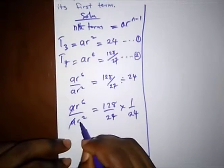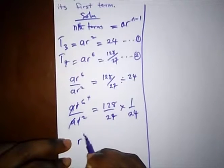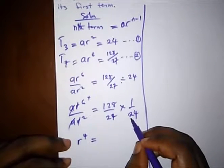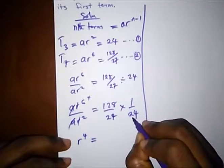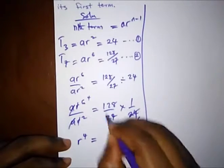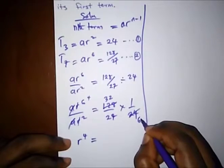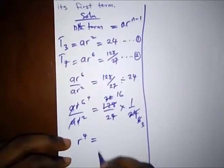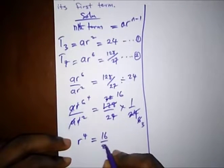So here a will cancel a, so this will cancel and we are left with ar⁴. So here, let's use smaller numbers. 4 would go here 6 times, 4 would go here 32 times and 2 will go here 16 times. So we have 16, 27 times 3 is 81, 16 over 81.